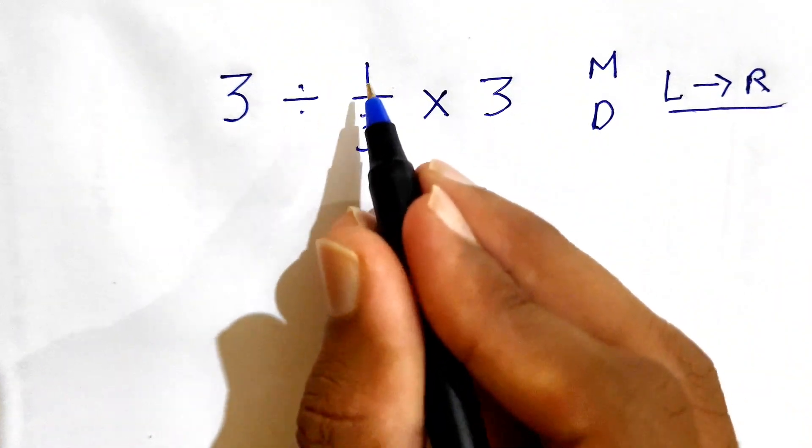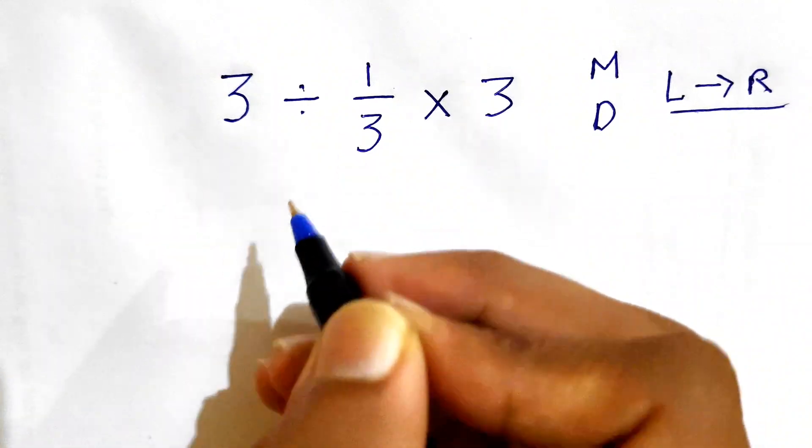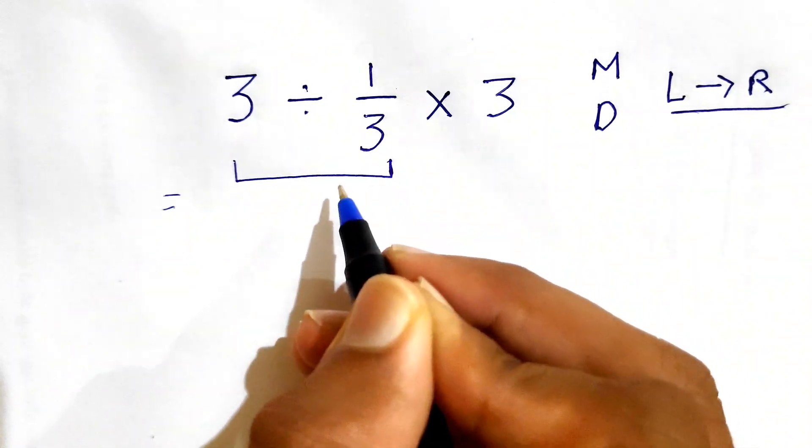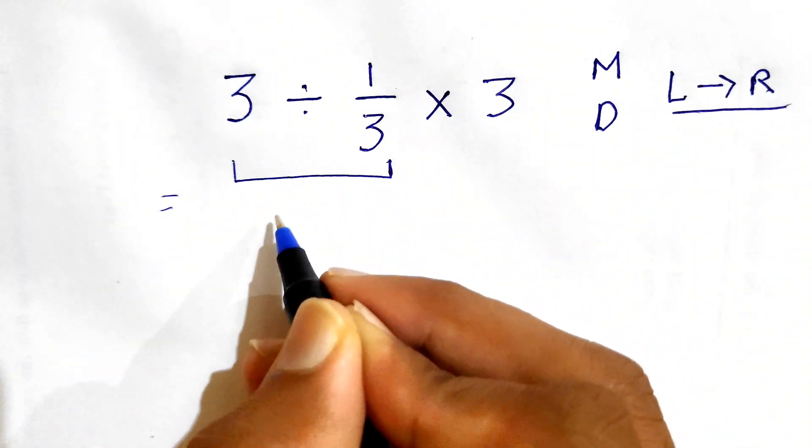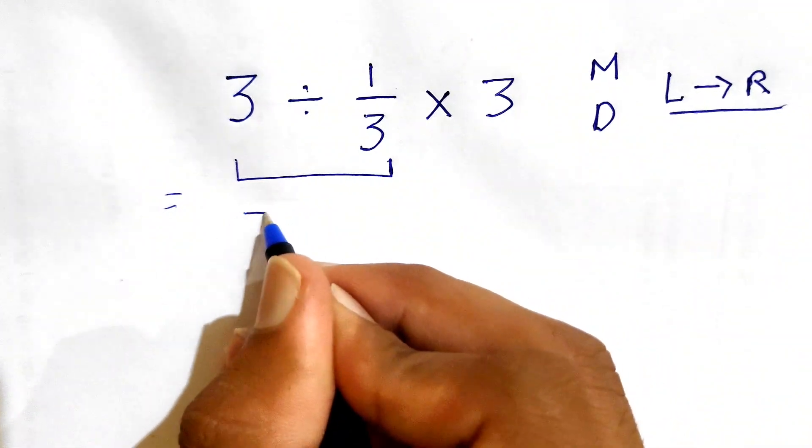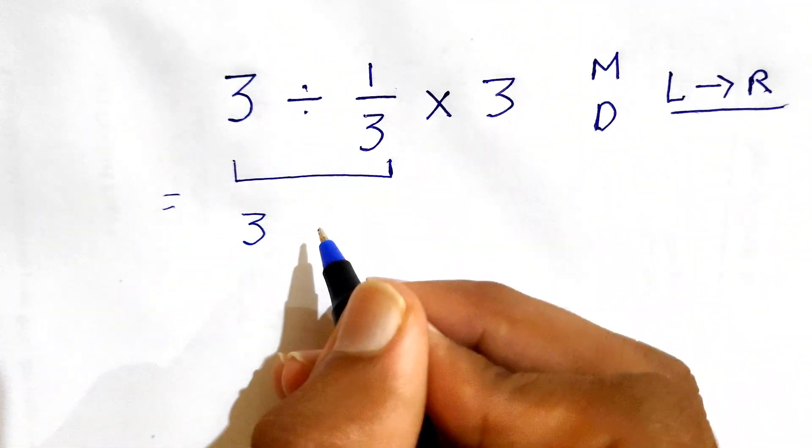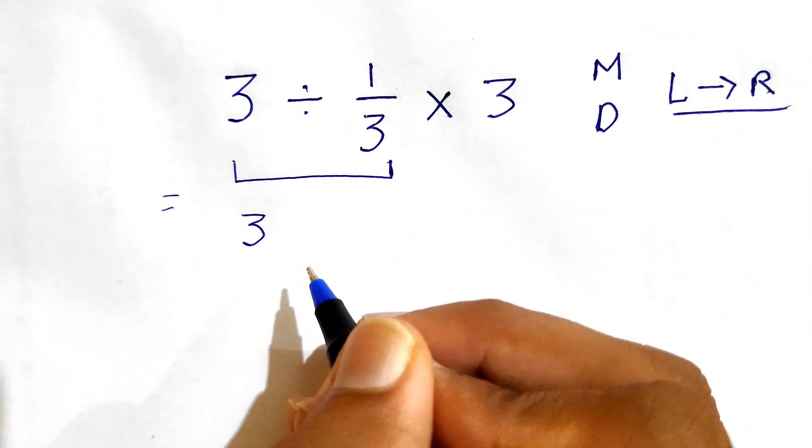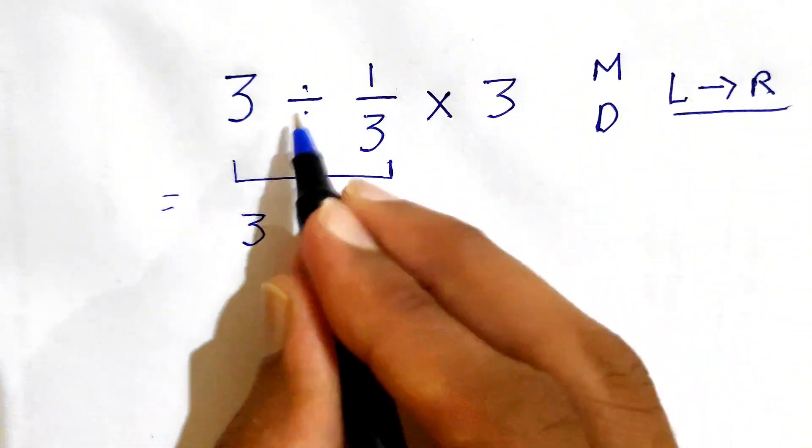Let's try solving this. First we solve 3 divided by 1 over 3. We can write this expression as 3 divided by 1 over 3, but we need to use one rule here called the KCF rule. As we are dividing fractions, we can use that rule.